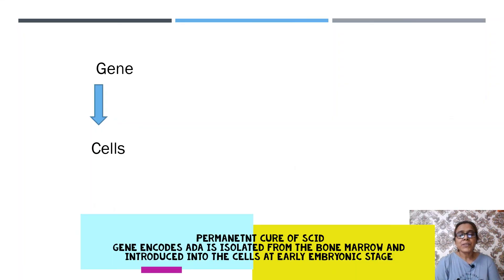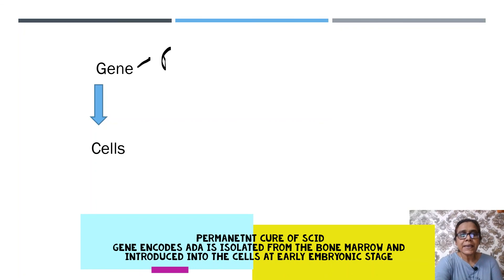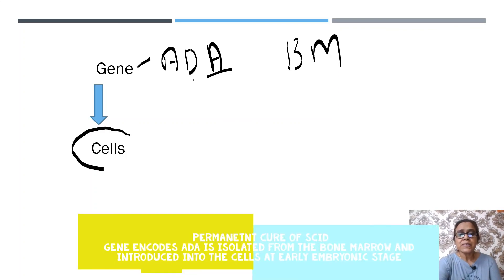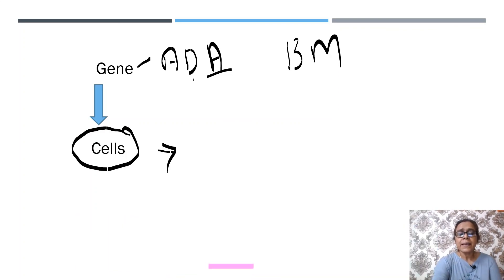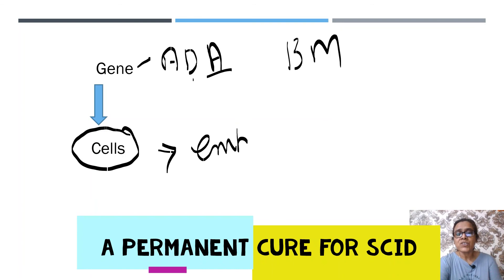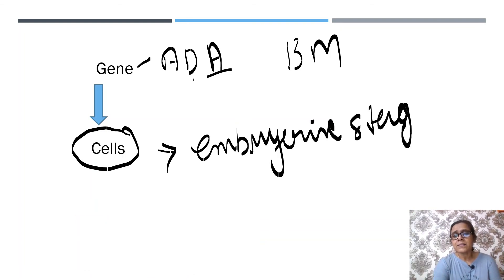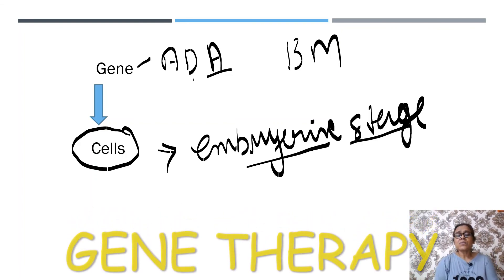For a permanent cure, the gene which encodes ADA is isolated from the bone marrow and then introduced into cells at the embryonic stage. This provides a permanent cure for SCID. This was all about gene therapy.